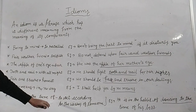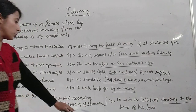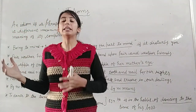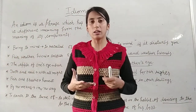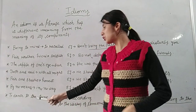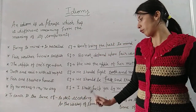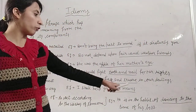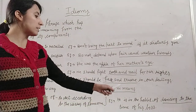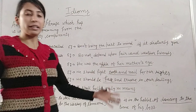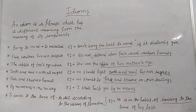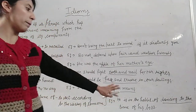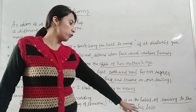'To dance to the tune of' means to act according to the wishes of someone — किसी की wishes के according act करना, उनके काम करना. Example: He is in the habit of dancing to the tune of his boss. To dance to the tune of means to act according to the wishes of someone.